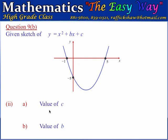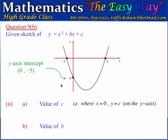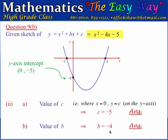Part 2 wants us to calculate the values of c and b. For c, when x equals 0, y equals c, which coincides with the y-axis intercept. The graph gives us the y-axis intercept as negative 5, confirming c equals negative 5. Our quadratic function is x squared minus 4x minus 5, so b equals negative 4.